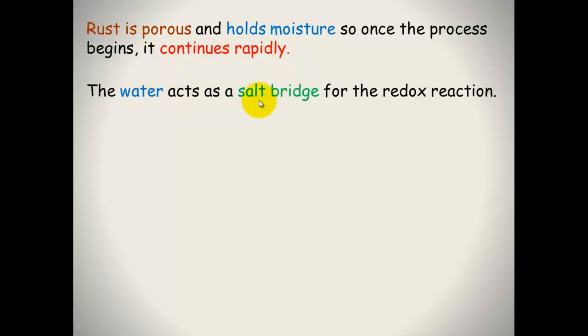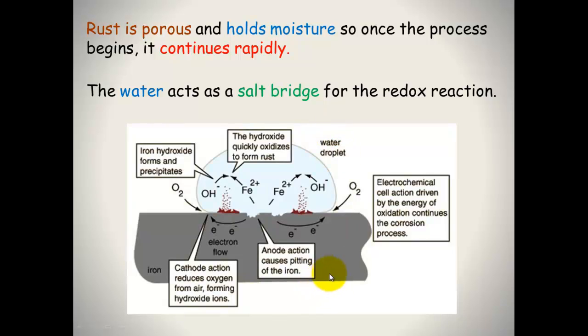The water is acting as a salt bridge. So it's helping to connect that circuit. So here's just a diagram that's out of your textbook. The anode here causes the breaking up of the iron. So the iron is leaving. It's breaking up and forming iron ions. At the cathode, you've got the oxygen reacting with the electrons to form the hydroxide ions. And those hydroxide ions with the iron ions will precipitate to form iron hydroxide. And that process continues from there.